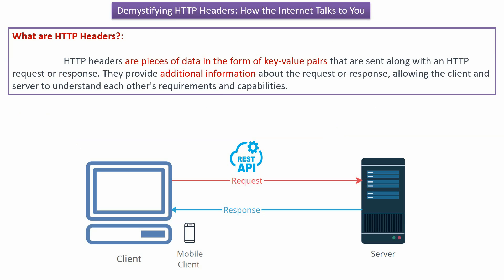What are HTTP headers? HTTP headers are pieces of data in the form of key-value pairs that are sent along with an HTTP request or HTTP response. They provide additional information about the request or response, which allows the client and server to understand each other's requirements and capabilities.